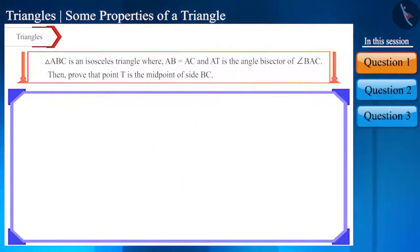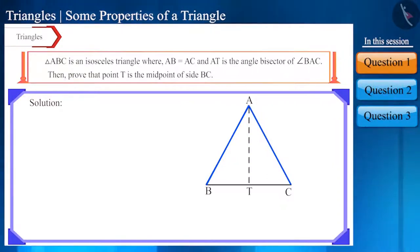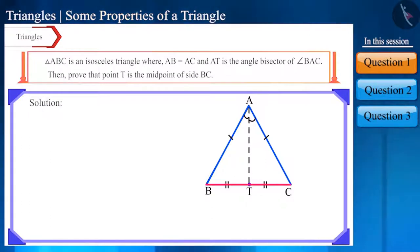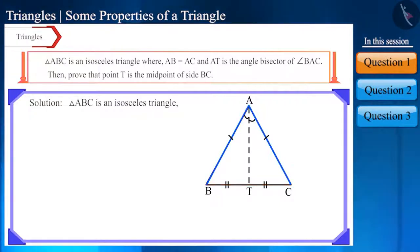Friends, it's given that triangle ABC is an isosceles triangle in which side AB is equal to side AC, and side AT is the angle bisector of angle BAC. We have to prove that point T is the midpoint of side BC, or that side BT is equal to side CT. Since triangle ABC is an isosceles triangle, angles opposite to its equal sides — angle B and angle C — will be equal.